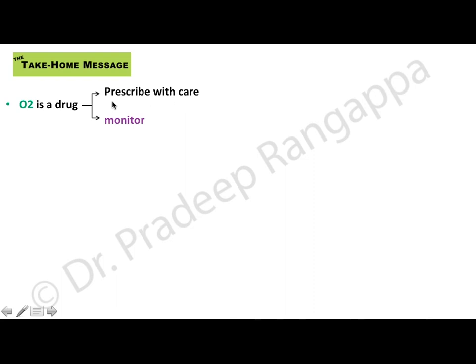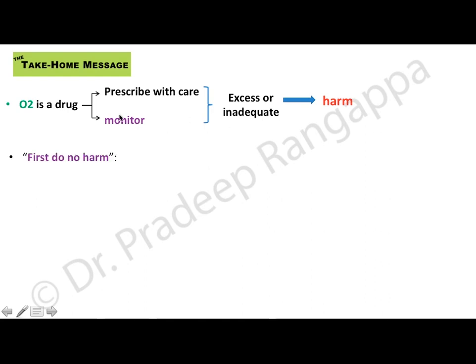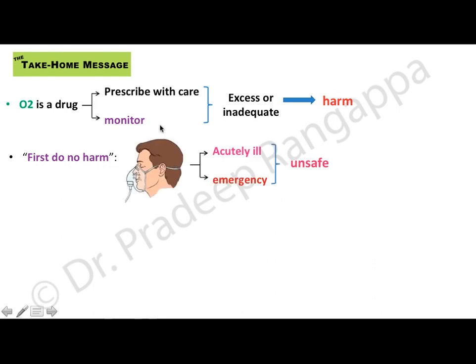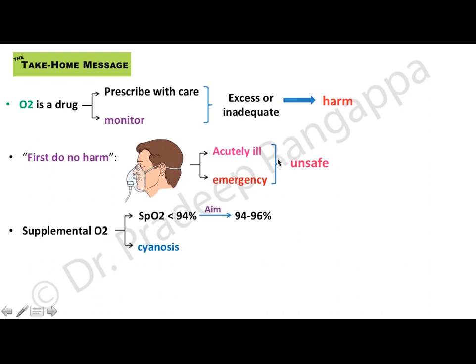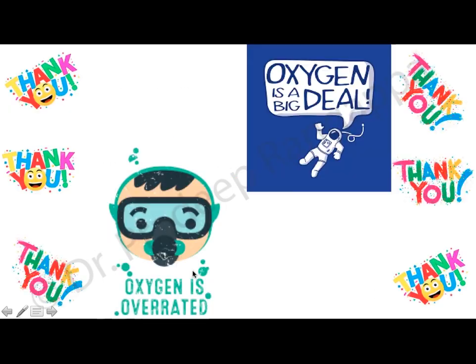What is keenly awaited is the ICO-ROX study being conducted by the ANZICS group — a randomized controlled trial with a sample size of more than a thousand patients, with results soon to be published. I would assume this study will show no difference between oxygen versus no oxygen, as is typical of most Australian studies. To end: oxygen is a big deal, and oxygen is overrated. Thank you very much.